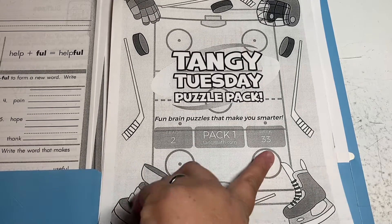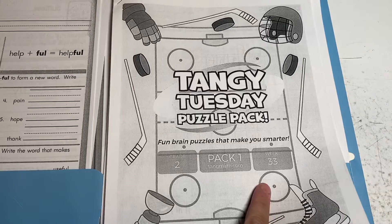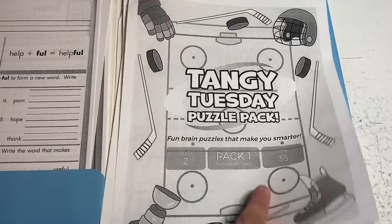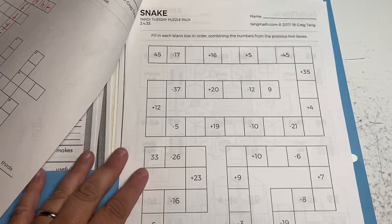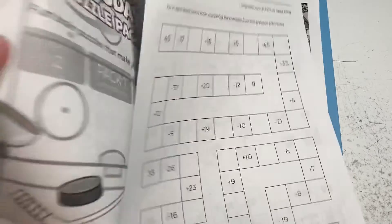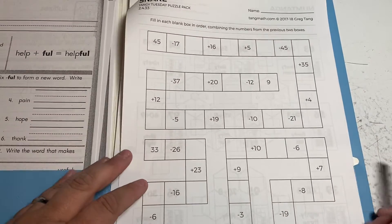Good morning, it's Tuesday and we're in packet 33, which is the one that has the hockey equipment on it. Today we're doing Snake, and as you can tell, Snake is getting harder because you're almost in third grade.